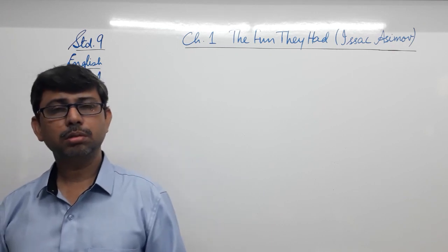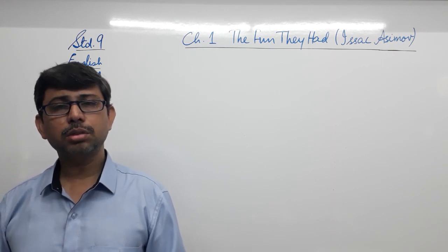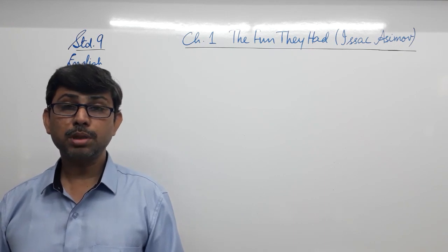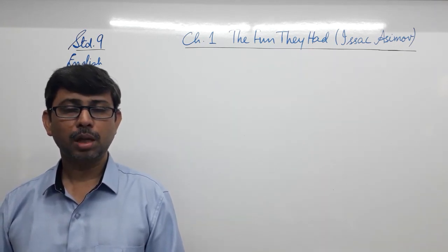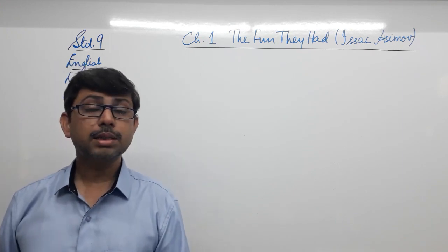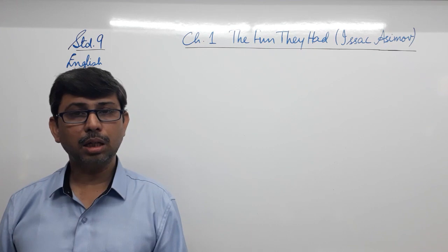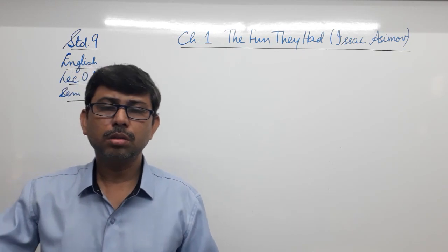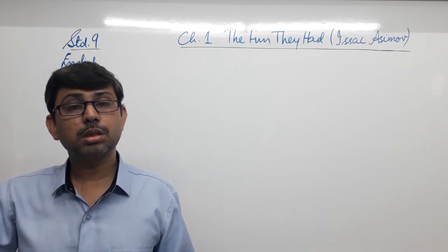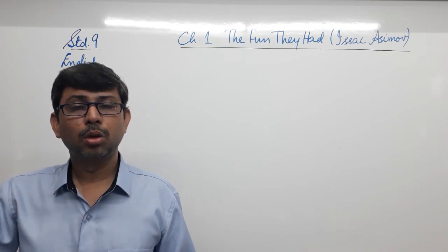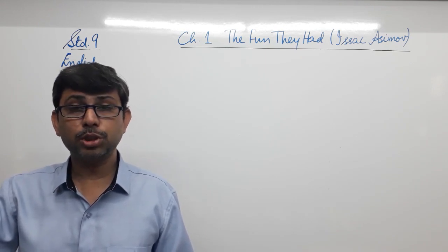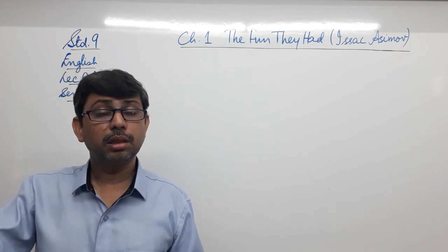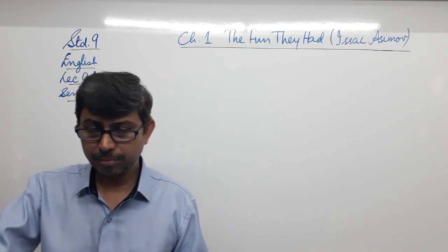To discuss about the text, the Beehive contains altogether 11 units of which the first 10 units contain two chapters each, a prose and a poem. And the 11th unit is a single chapter, that is a play, a drama. Out of these 11 units, we will be covering the first 6 units, that is 12 chapters from the Beehive textbook.